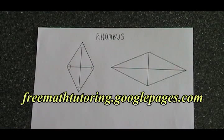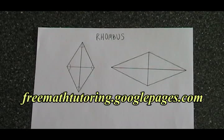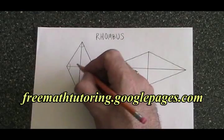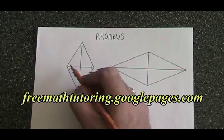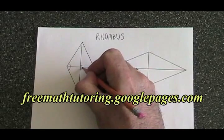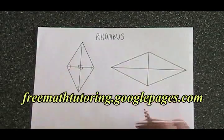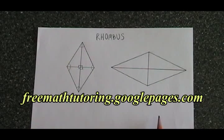A rhombus has four sides that are equal in length, which is the same as a square. But this is where the difference ends. A rhombus has two diagonals, which although they cross each other at right angles like the diagonals of a square, they are not equal in length like the diagonals of a square.